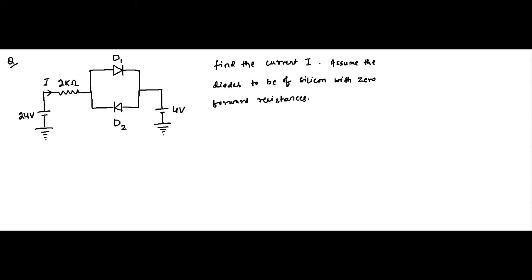Here we are with another question on diode circuits. This circuit has diodes D1 and D2 which are silicon diodes with 0 forward resistance. There is no mention of whether the diodes are ideal, so we have to assume there will be some built-in potential. When the diode type is specified without mention of ideality, you must consider the built-in potential — here silicon means 0.7 volt. Forward resistance is 0, as given, for diodes D1 and D2.